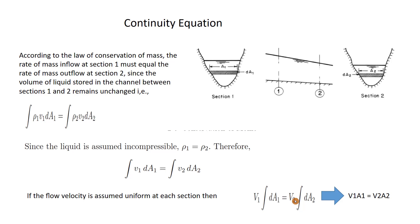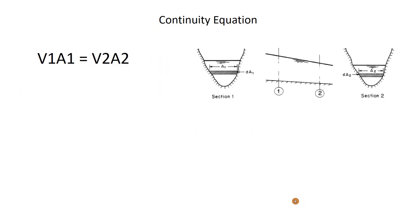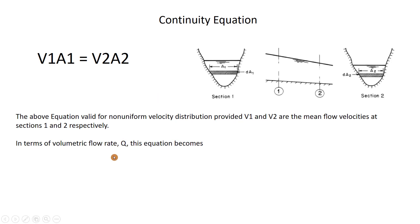This equation is also valid for non-uniform velocity, but we have to change V1 to mean velocity at section 1 and V2 to mean velocity at section 2. In terms of volumetric flow rate Q, this equation becomes Q1 equals Q2. In hydraulic engineering, this equation is usually referred to as the continuity equation.